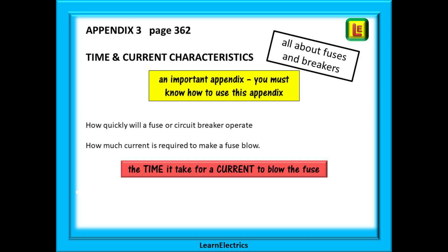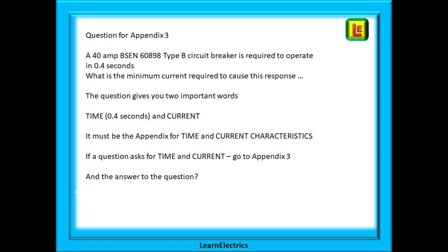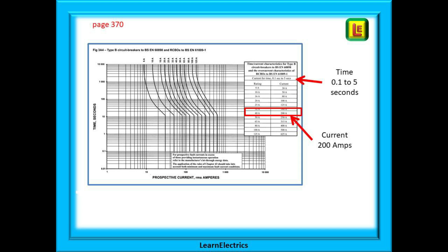Appendix 3 is all about breakers and fuses. The title includes the words time and current characteristics, so if a question comes up about a fuse or breaker and mentions a time and a current then this is the place to go. A typical exam question might say: a 40 amp BSEN 60898 type B circuit breaker is required to operate in 0.4 seconds — what is the minimum current required to cause this response? The question gives you two important words: a time (0.4 seconds) and current. It must be the appendix for time and current characteristics. Find page 370 for BSEN 60898 type B breakers and there in the chart on the right is the answer.